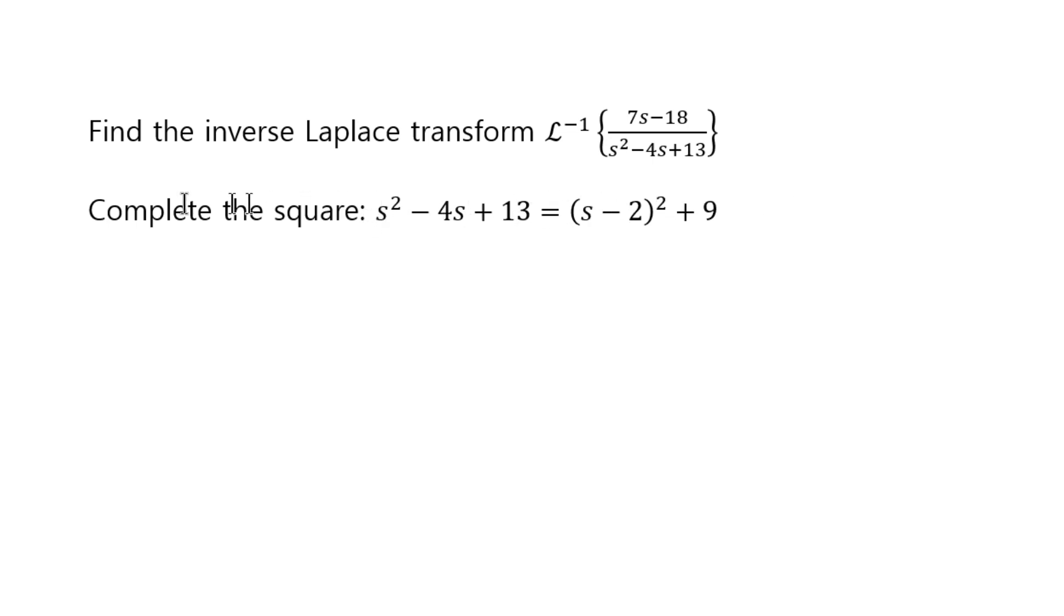So that's the first step. You have to know how to complete the square. Once you have completed the square, then the next step is to rewrite the inverse Laplace transform of this thing, to rewrite the denominator as the completed square form, but also to write this extra constant as something squared. So we rewrite it like this.